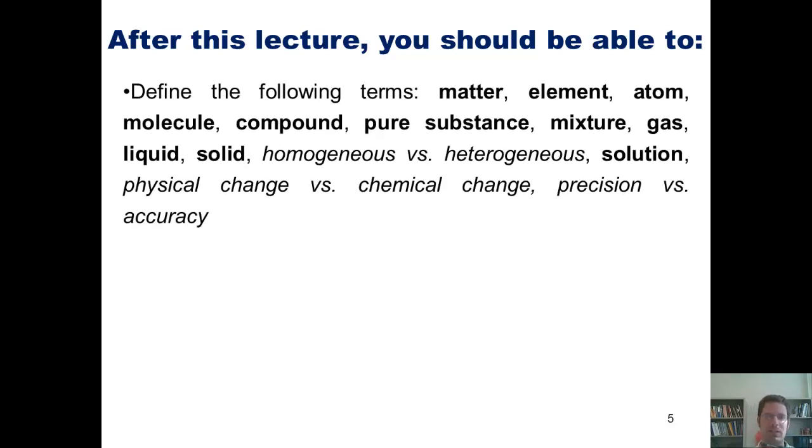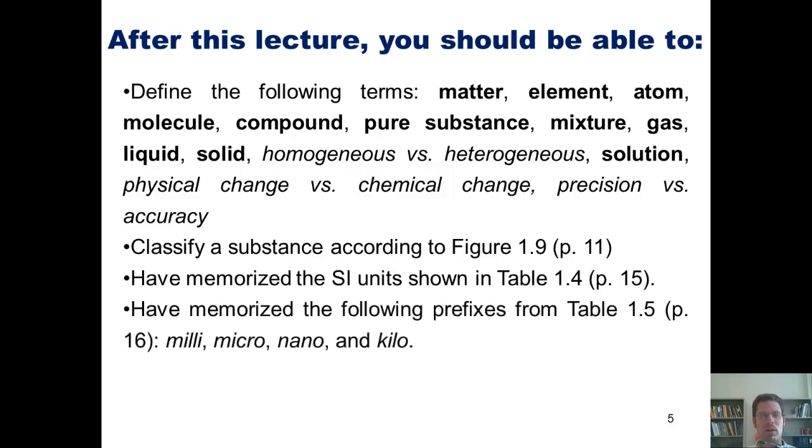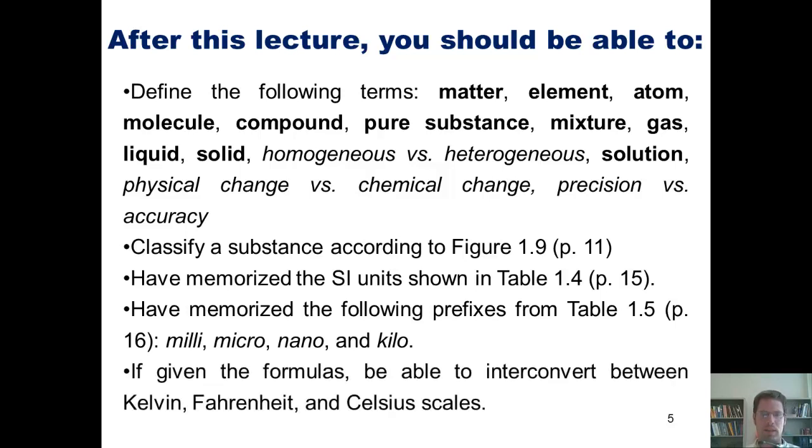After this lecture, you should be able to define the following terms: matter, element, atom, molecule, compound, pure substance, mixture, gas, liquid, solid, homogeneous versus heterogeneous, solution, physical change versus chemical change, and precision versus accuracy. You should also be able to classify substance according to figure 1.9 from our text, have memorized the SI units shown in table 1.4, have memorized the following prefixes from table 1.5: milli, micro, nano, and kilo, and if given formulas, be able to interconvert between Kelvin, Fahrenheit, and Celsius scales.